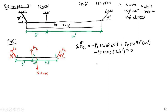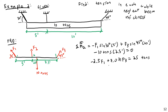Simplifying using decimal values — sine 30 is 0.5, so the F1 term becomes negative 2.5 F1. Sine 45 gives 0.7071, so the F3 term becomes plus 7.071 F3. Bringing the weight term to the right side: negative 2.5 F1 plus 7.071 F3 equals 25 tons. That's one equation with two unknowns.